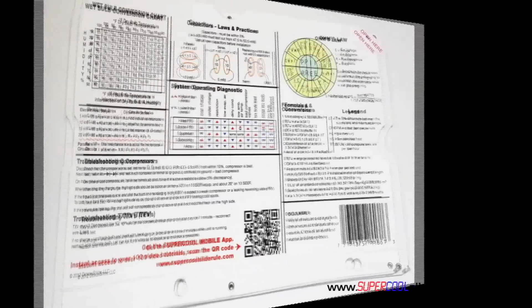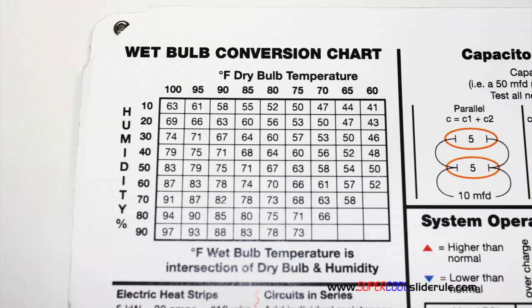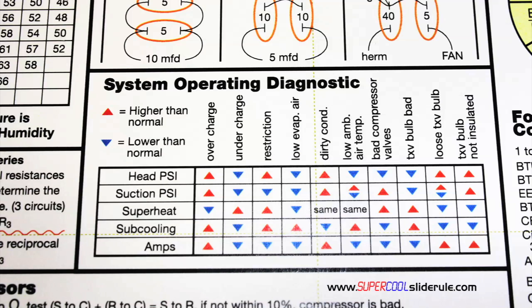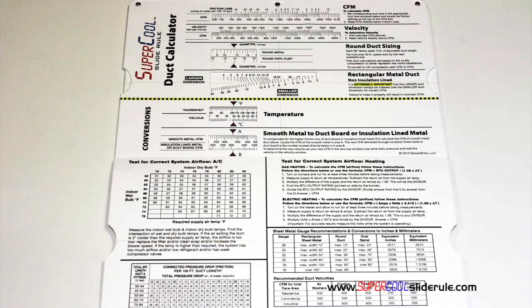The back cover contains required formulas, capacitor rules and practices, a wet bulb conversion chart, how to perform computations on series or parallel circuits, an electric heat strip guide, a complete system troubleshooting diagnostic chart, and how to troubleshoot compressors and TXV.